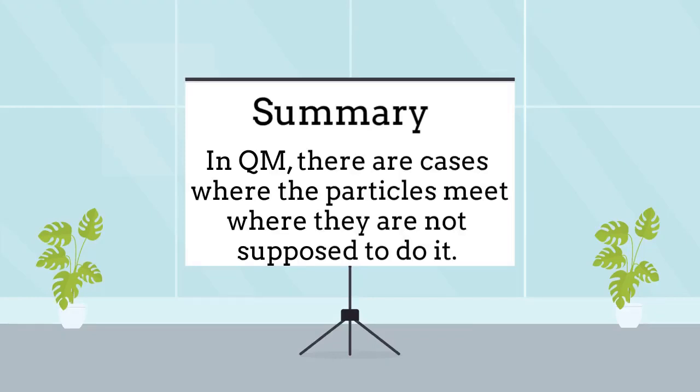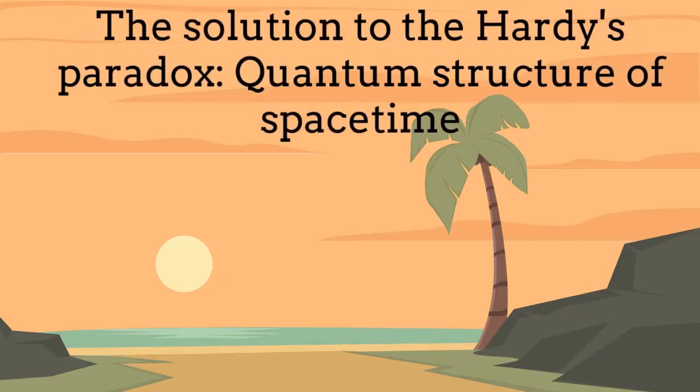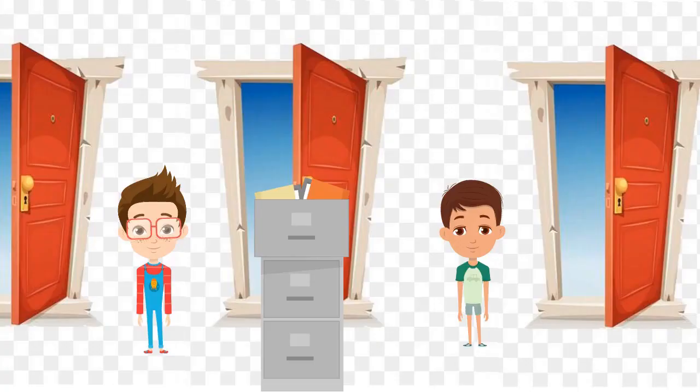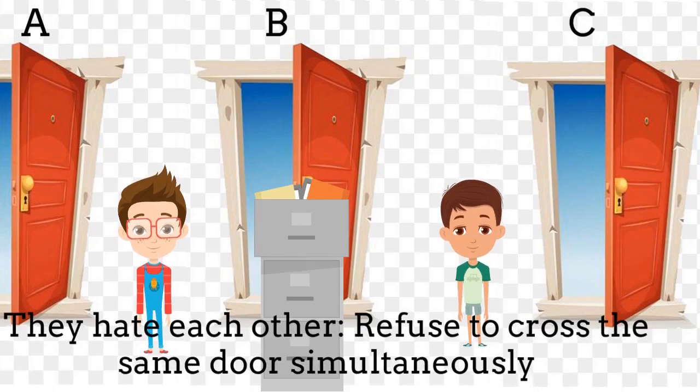In summary, in quantum mechanics, there are cases where the particles appear where apparently they shouldn't do it. This is the famous Hardy's paradox. In today's episode, we will talk about the solution of the Hardy's paradox. This is naturally connected with the quantum structure of space-time. Let's enjoy it. Let's remember a little bit about the Hardy's paradox. Imagine Michael on the left-hand side being able to cross only through either door A or B. Meanwhile, Richard on the right-hand side is only able to cross through the doors B and C. They hate each other and they have promised not to cross through the door B if they perceive each other around there.